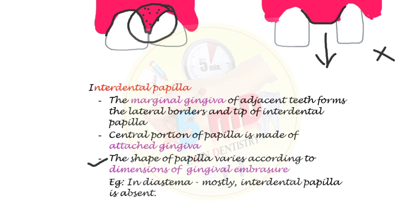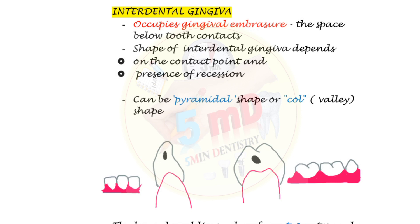The interdental papilla is also of aesthetic concern because the absence of it will cause a black triangle, which is seen due to the lack of any gingiva in the embrasure portion. Thus we saw the basics of anatomy of gingiva and its three components. To know more about marginal gingiva and attached gingiva, see the previous parts of the video. Thank you.